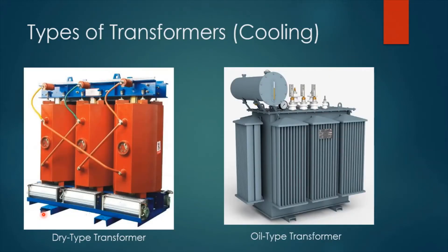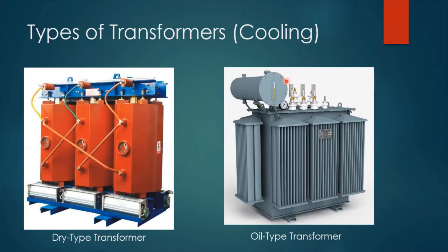Now let's look at types of transformer according to their cooling methods. Electrical transformers can be classified into different categories depending on their design, construction, supply, and purpose. However, I will emphasize on the types of transformers according to their cooling type. The transformer is equipment that heats due to the connected loads and due to the produced magnetic fields inside, so it is always important to consider the cooling type in your design. The first type is the dry transformer and the second is the oil transformer, also called the oil immersed type.